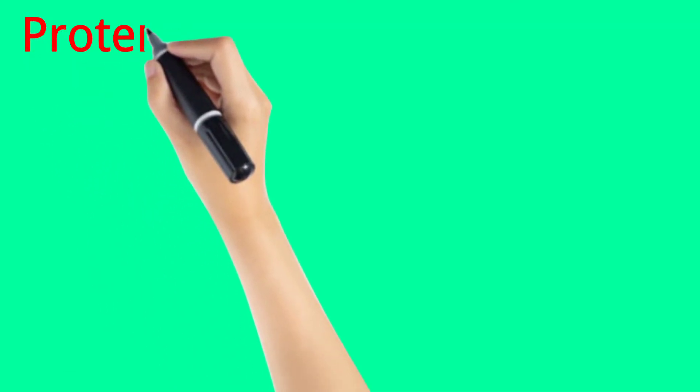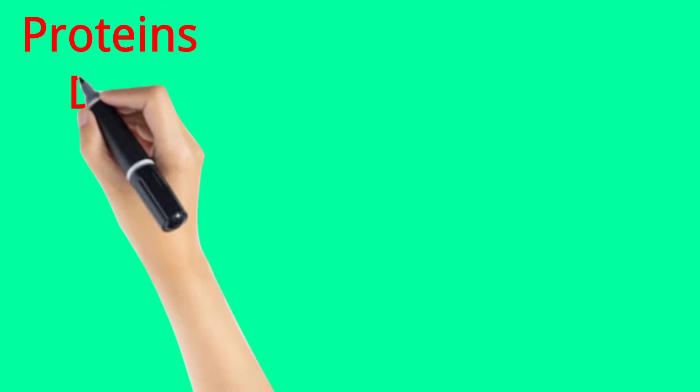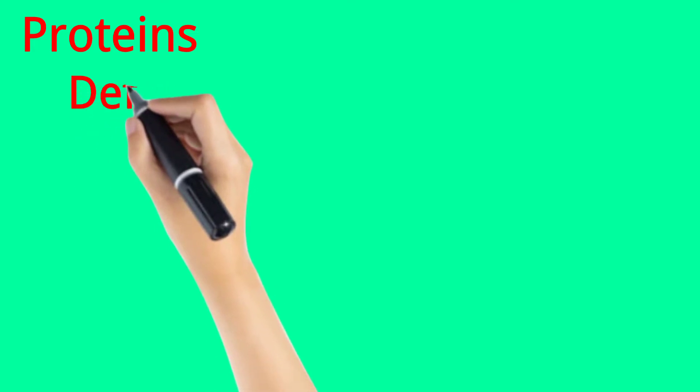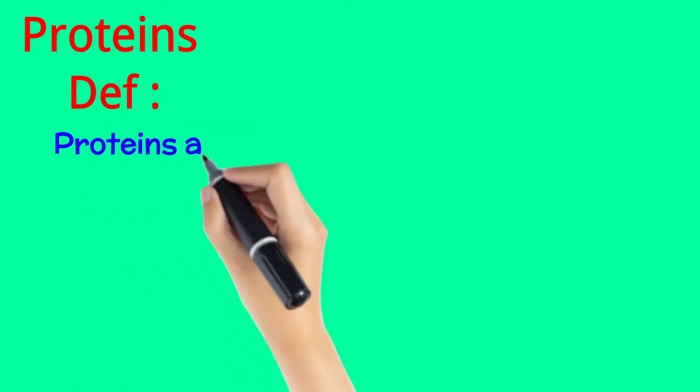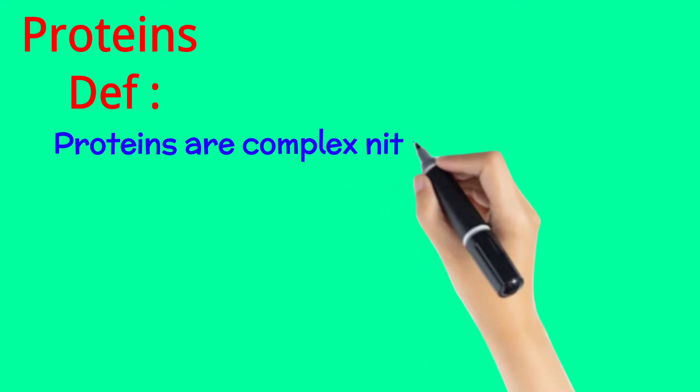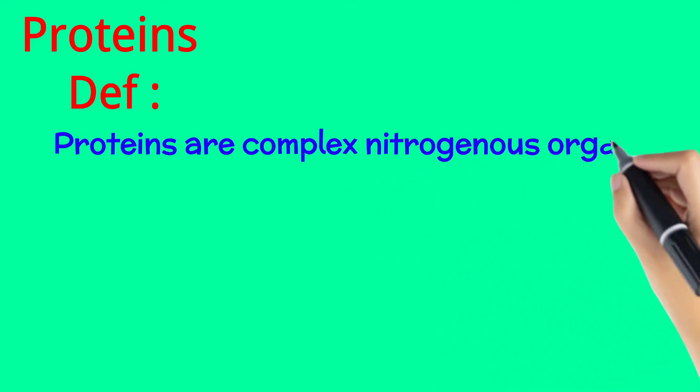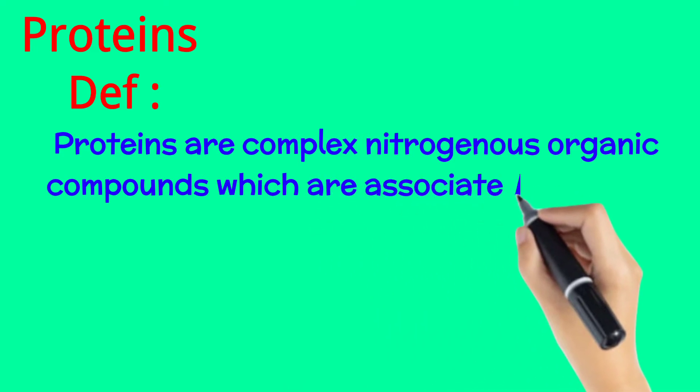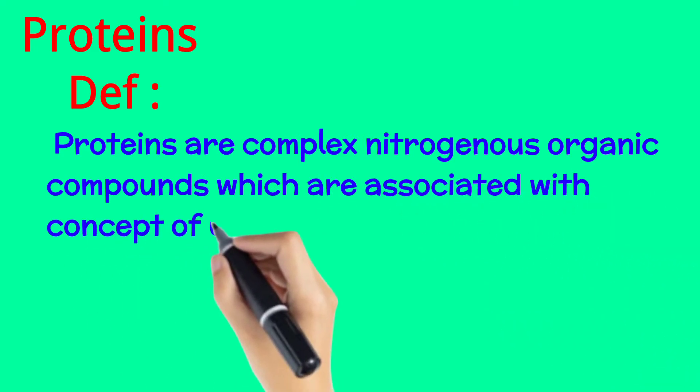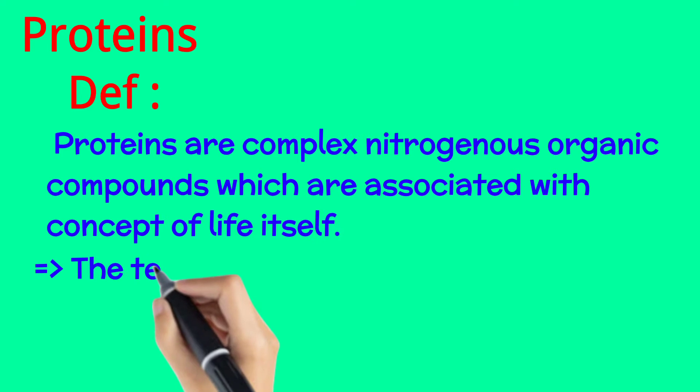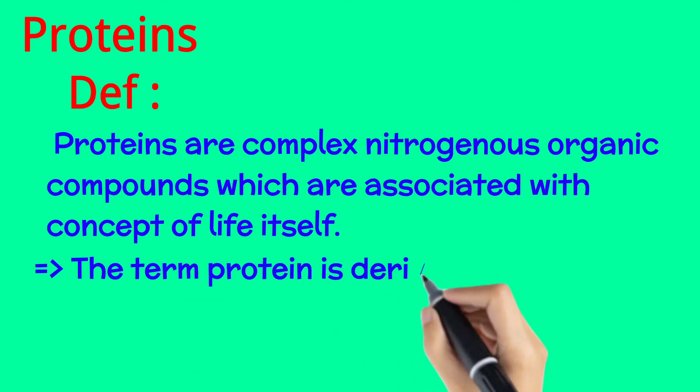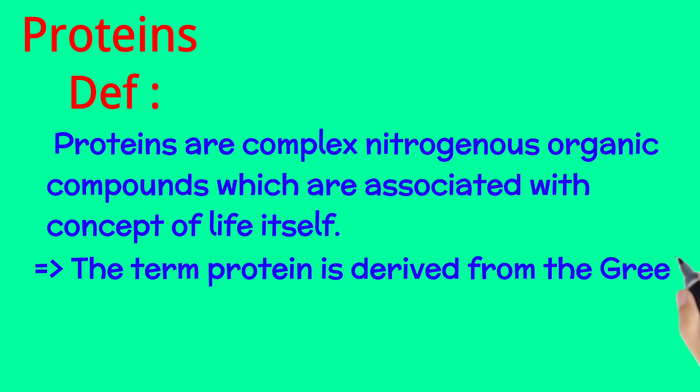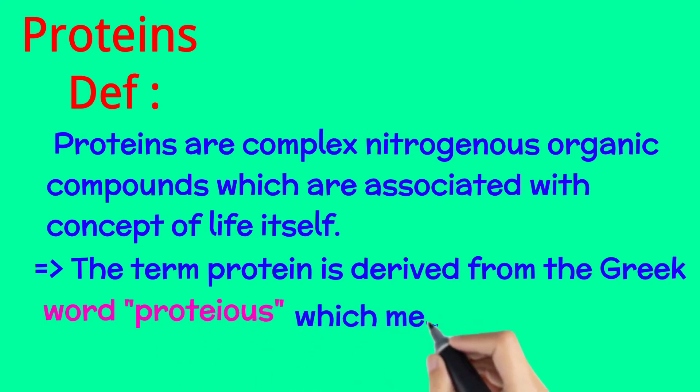Hello friend, today I am going to talk about proteins. First of all, we come toward the definition of protein. Proteins are complex nitrogenous organic compounds which are associated with the concept of life itself. The term protein is derived from the Greek word proteus, which means first, prime, or chief.